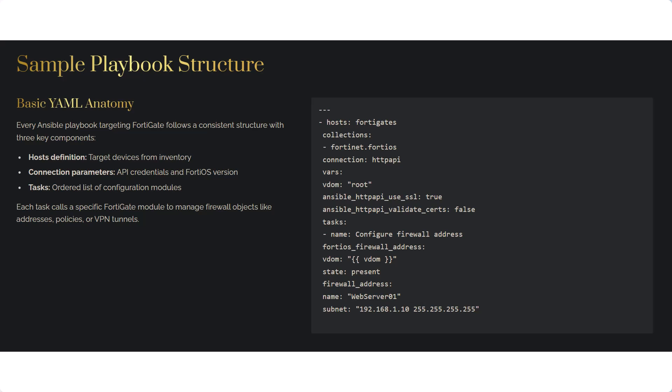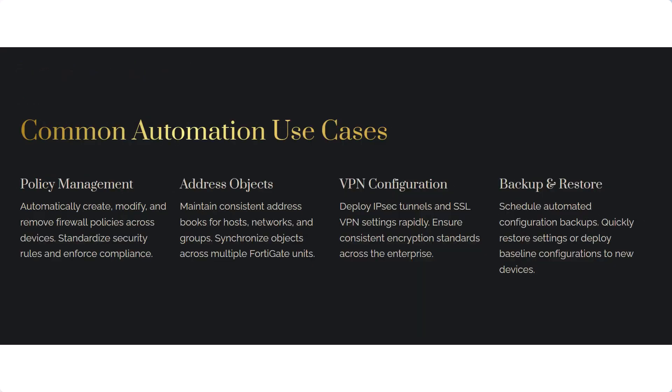As you can see, a typical playbook snippet includes hosts, collections, connection, vars, and tasks. This is just a basic and simple structure — not necessarily the best structure for production playbooks — but it helps us understand the basic YAML anatomy and what we will have in the YAML structure.